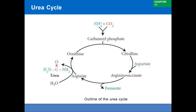Urea has two nitrogen atoms: one derived from free ammonia or ammonium ion and the other from the amino acid aspartate; the carbon atom is supplied by carbon dioxide. A series of five reactions are involved in the urea cycle. The first two reactions occur in mitochondria while the remaining three occur in the cytosol.